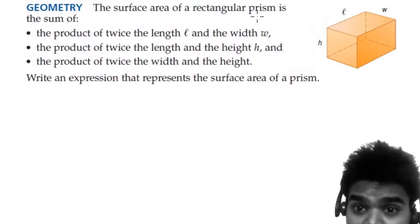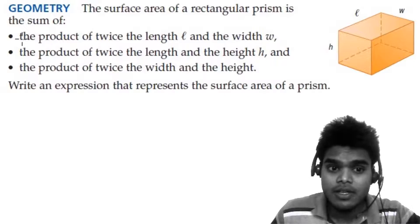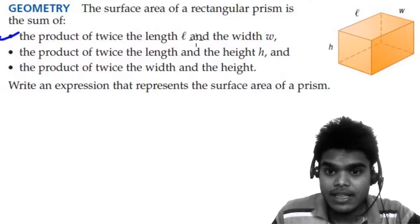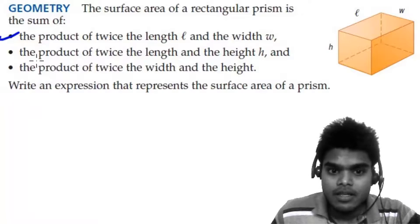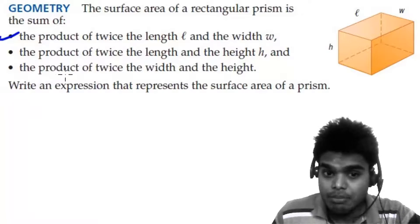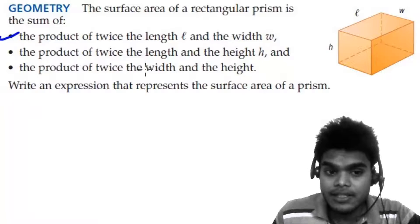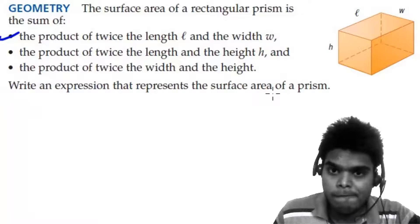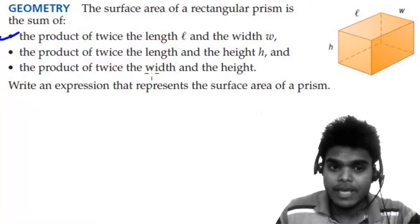The surface area of the rectangular prism is the sum of three things. The product of twice the length and the width. The product of twice the length and the height, and the product of twice the width and the height. Write an expression that represents the surface area of the prism. Okay, so let's go one by one.